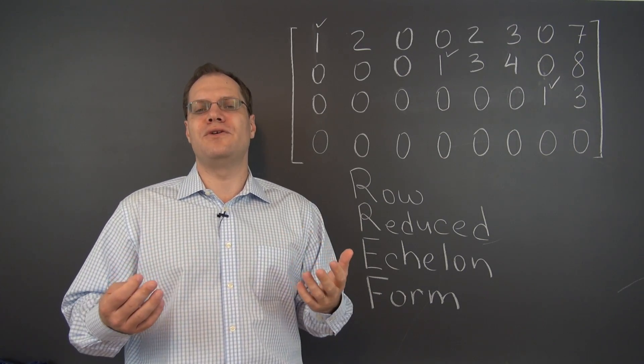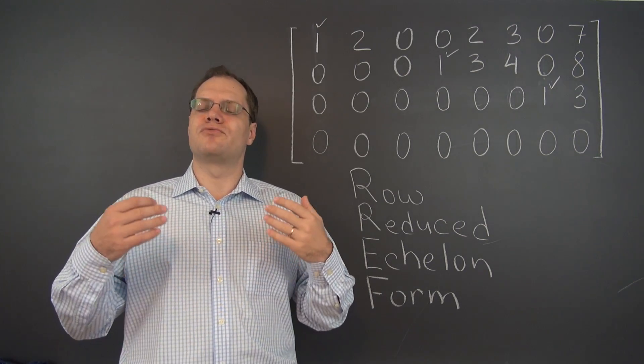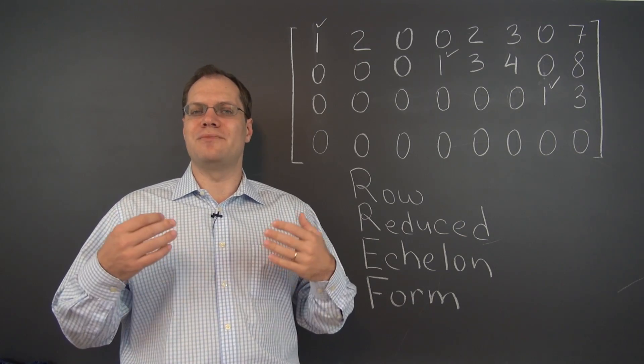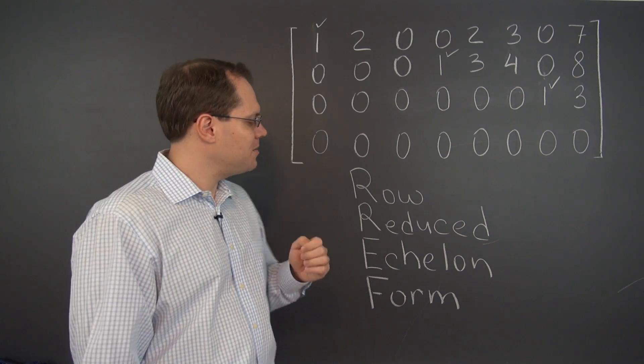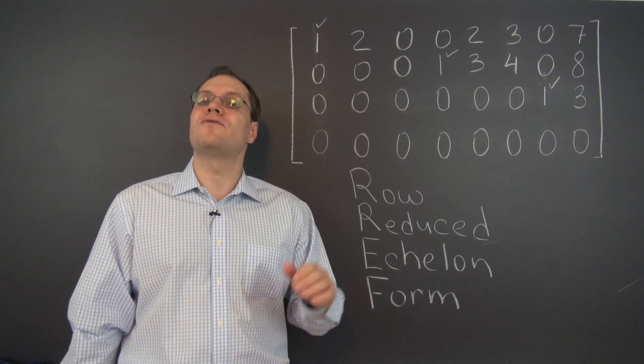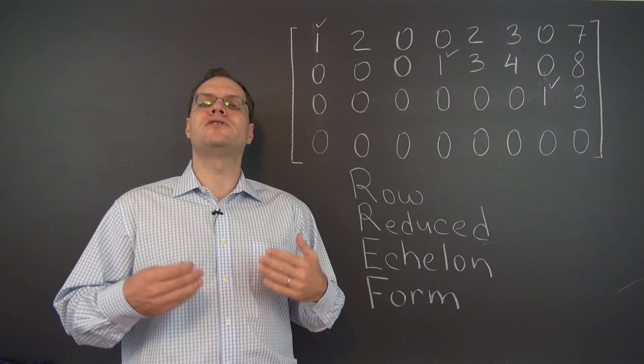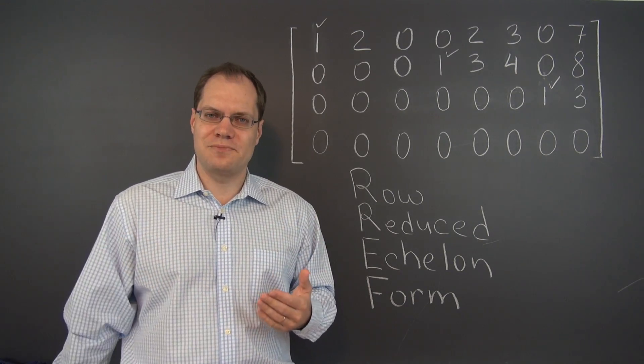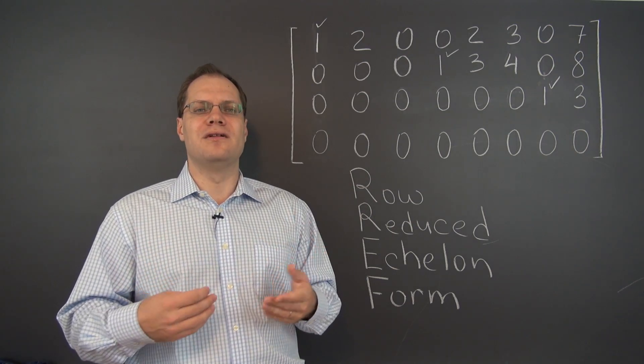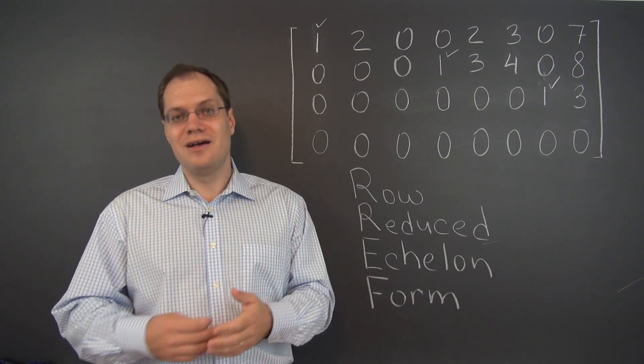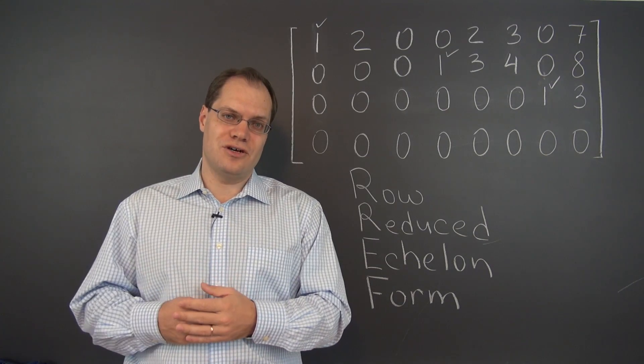As you can see from the point of view of rows, the row reduced echelon form can be described in fewer sentences, so maybe it's a little bit clearer to see from the row perspective. But of course, we continue to prefer the column perspective because it's more valuable from the geometric point of view and that analogy to geometry.